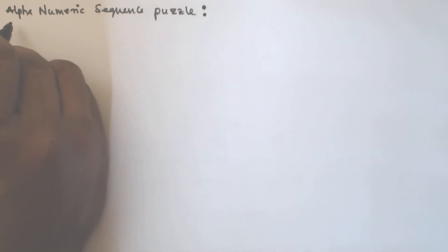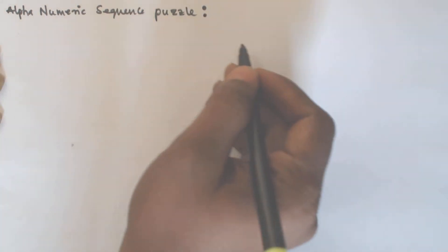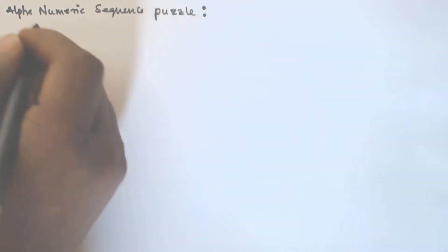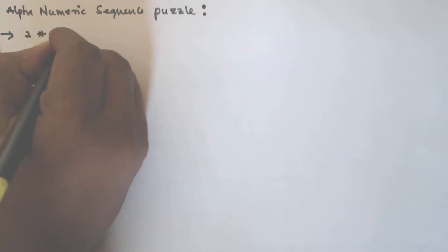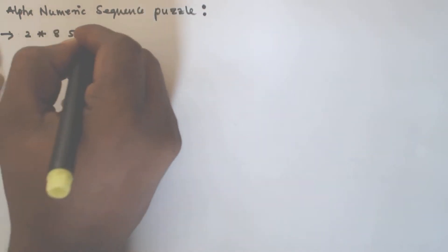Hello friends, in this video we will see another problem based on the alphanumeric sequence puzzle. Let us consider a given alphanumeric sequence as follows: 2 star 8, 5,